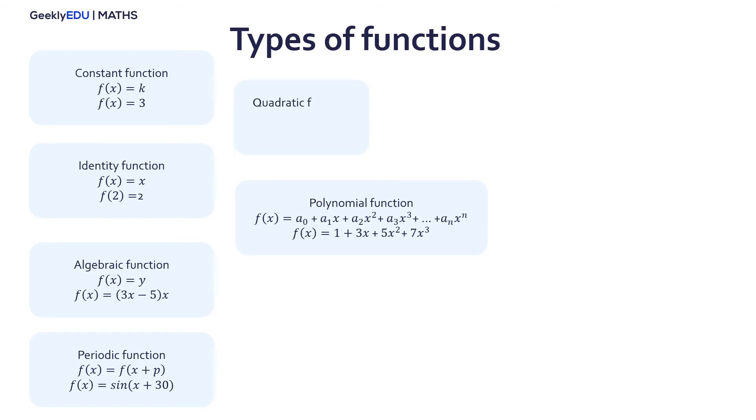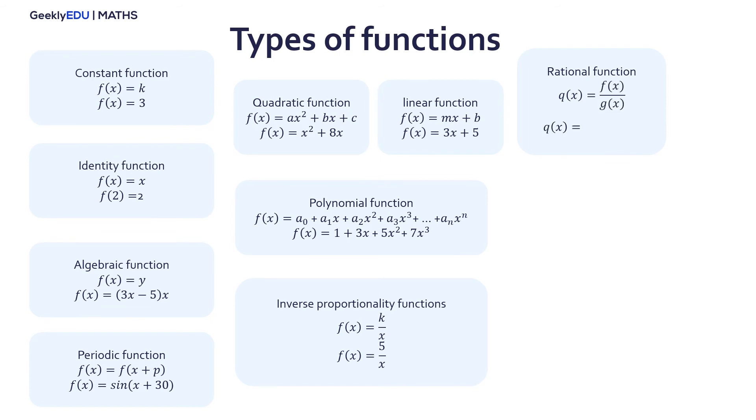The quadratic function is a polynomial function with a maximum power equal to 2 and forms a parabola. A linear function are all the characteristic functions of a straight line. It is considered a grade 1 polynomial function. The inverse proportionality function is the representation of an equilateral hyperbole in which k is a constant. Its domain is all real numbers other than 0. A rational function is a division of two functions of any kind.